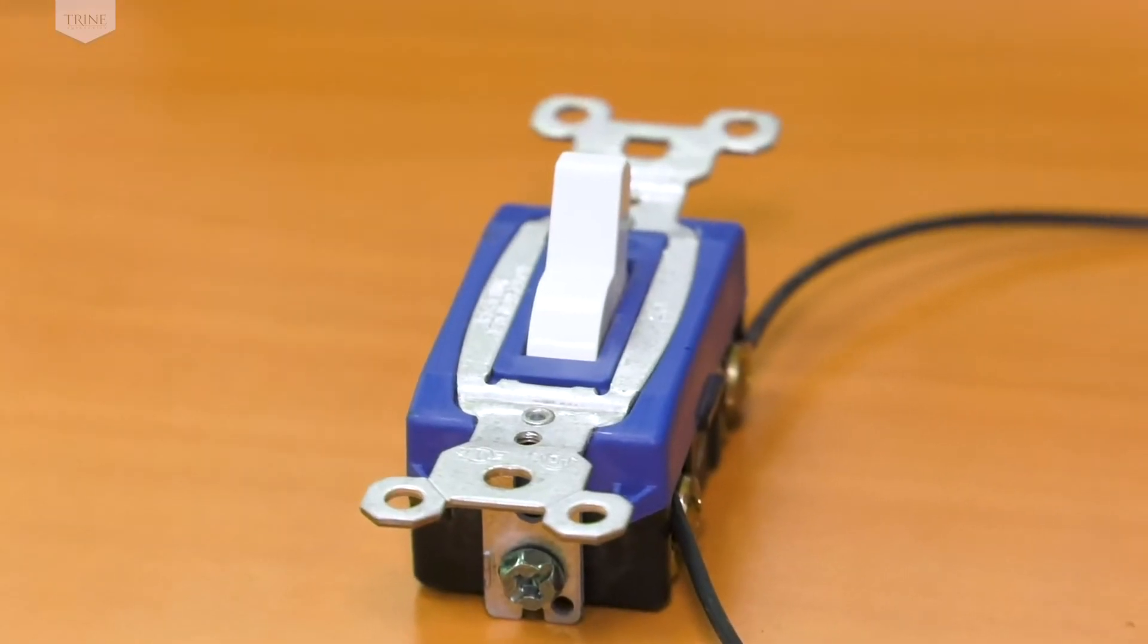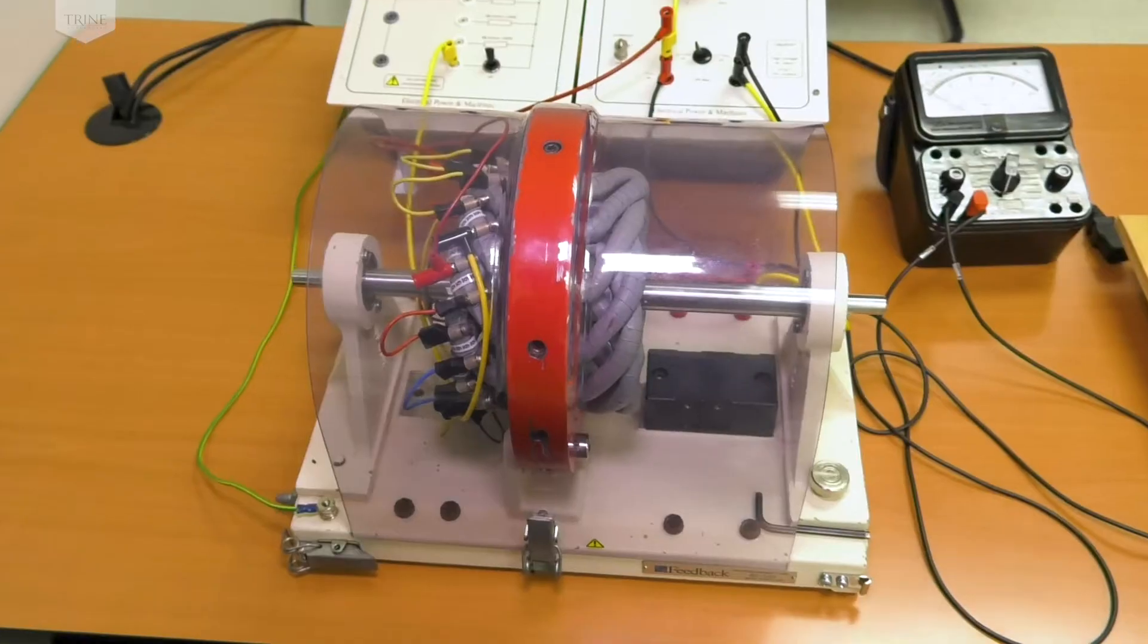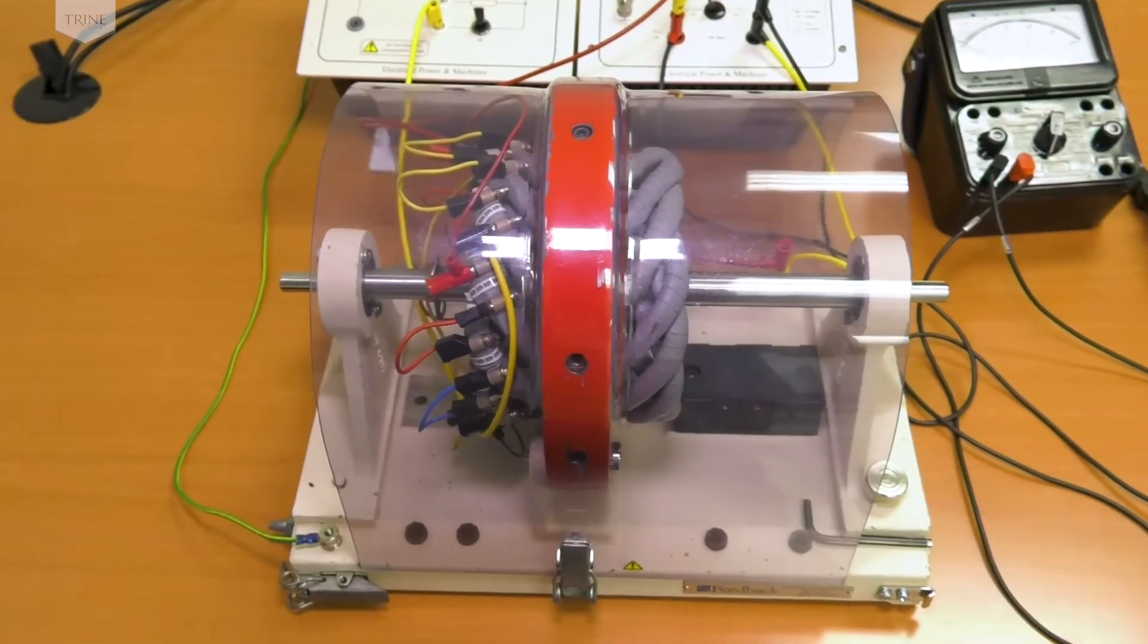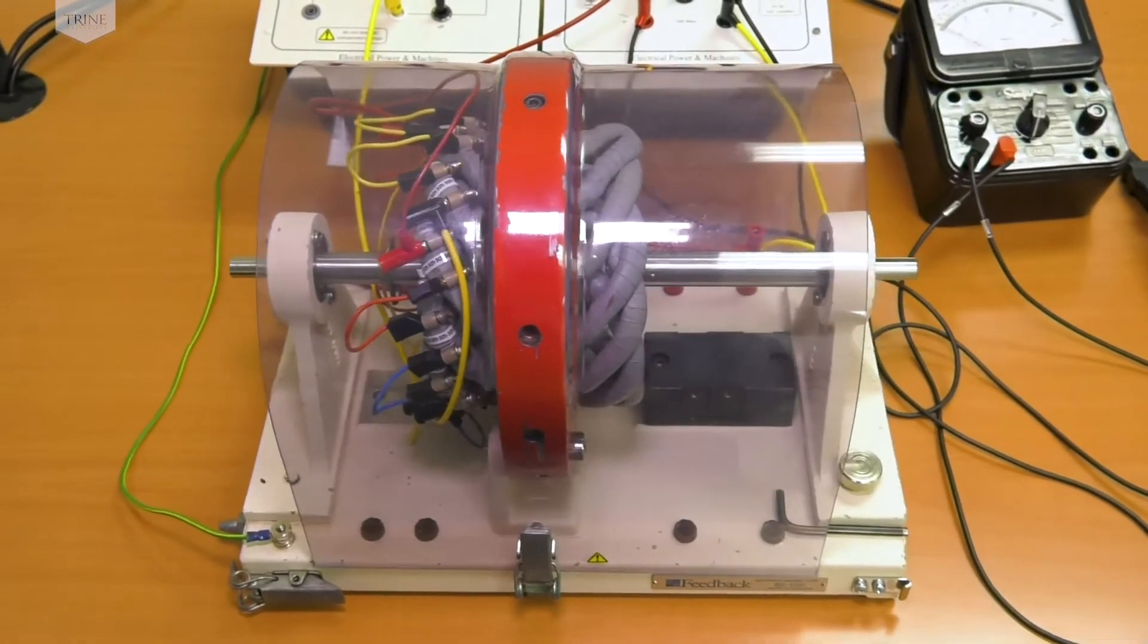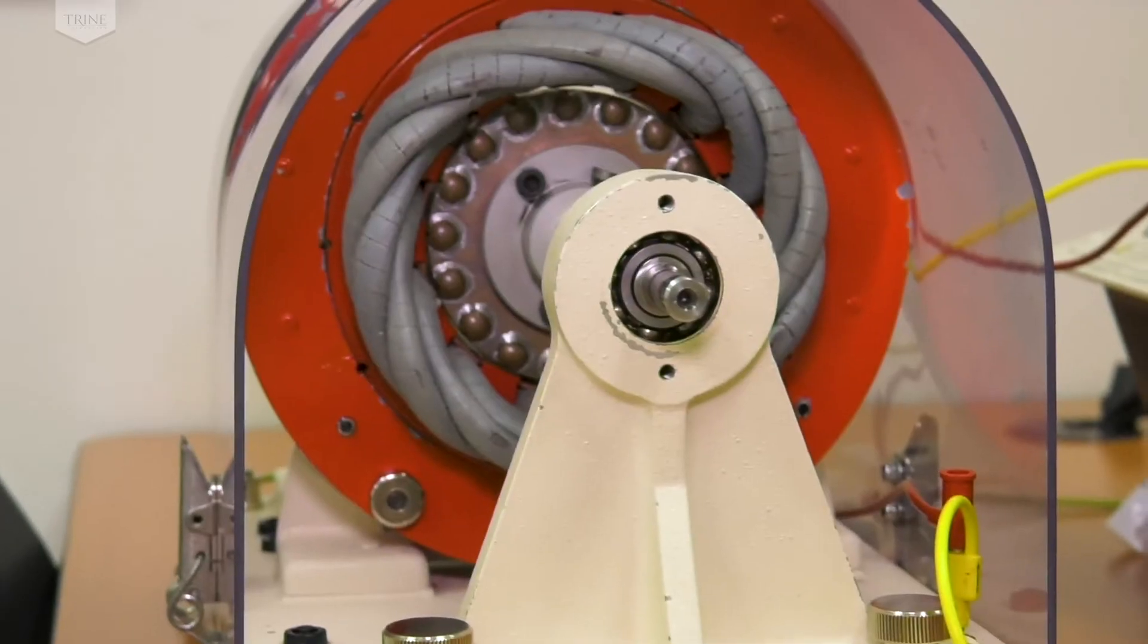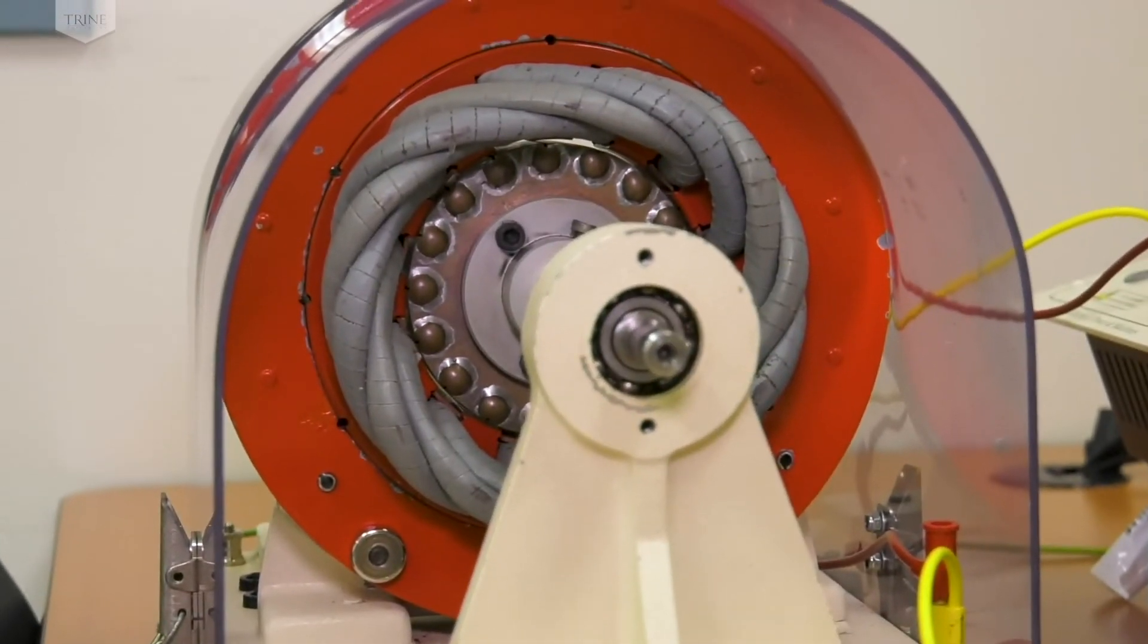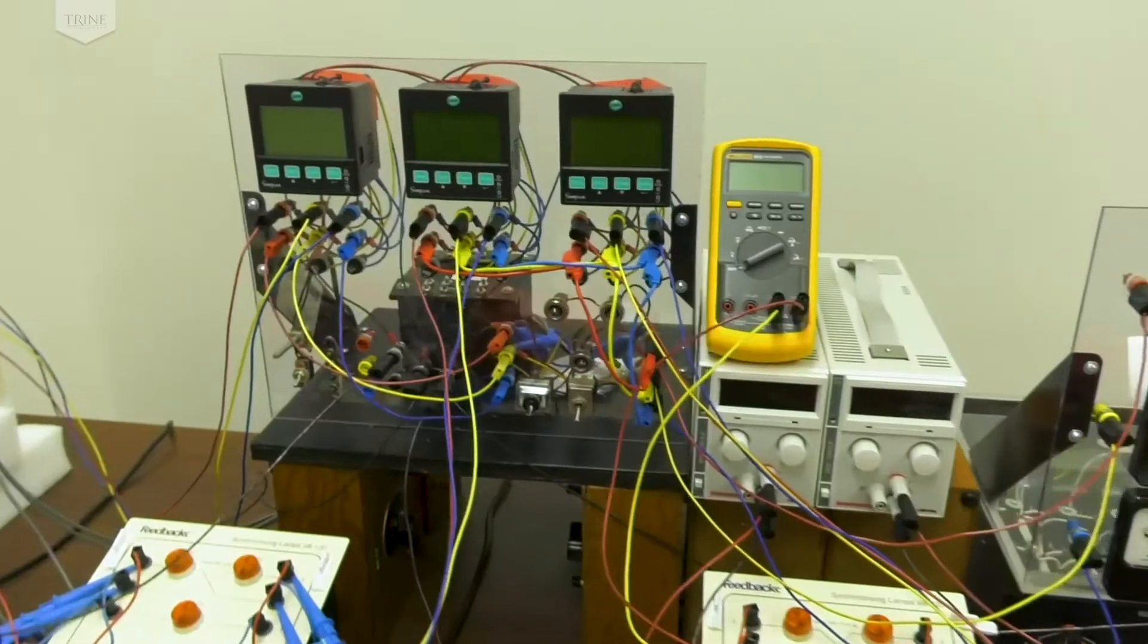A single phase induction motor serves as a dissectable machine, allowing students to build various machines including single phase DC machines, a three-phase synchronous motor, and a three-phase synchronous generator. Students can get inside the machine and connect the dots themselves. It also includes light bulbs for loading when the machine is built as a three-phase generator.